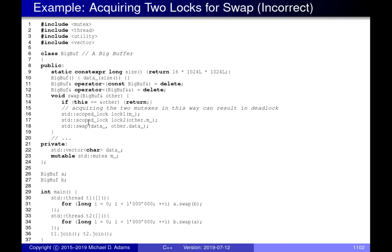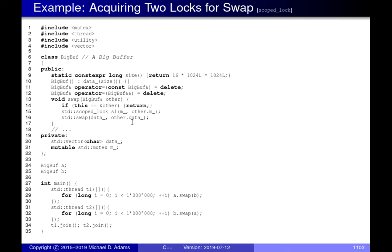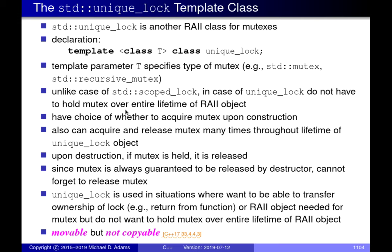The fix is to use scoped_lock with multiple mutexes. Instead of two separate scoped_lock objects, create a single one and pass both M_ and other.M_ as arguments to the constructor. scoped_lock applies a deadlock avoidance algorithm when locking multiple mutexes, guaranteeing it won't use inconsistent ordering that could cause deadlock. This is a very simple fix that resolves the problem from the previous example.